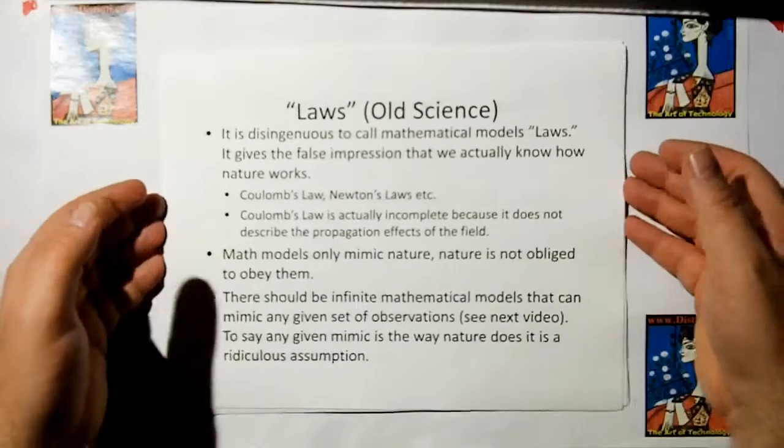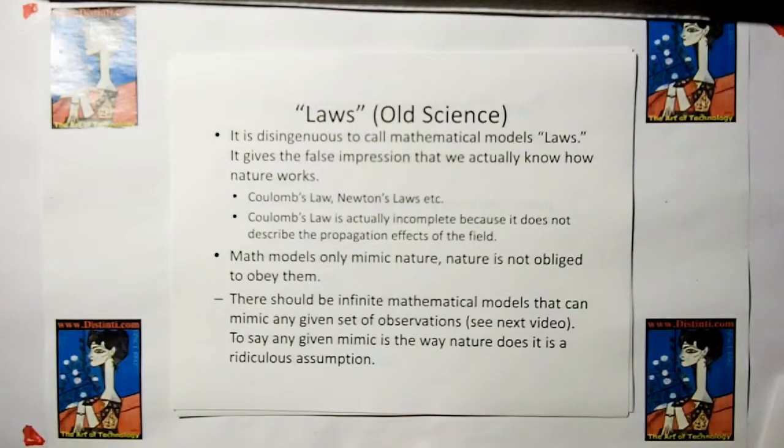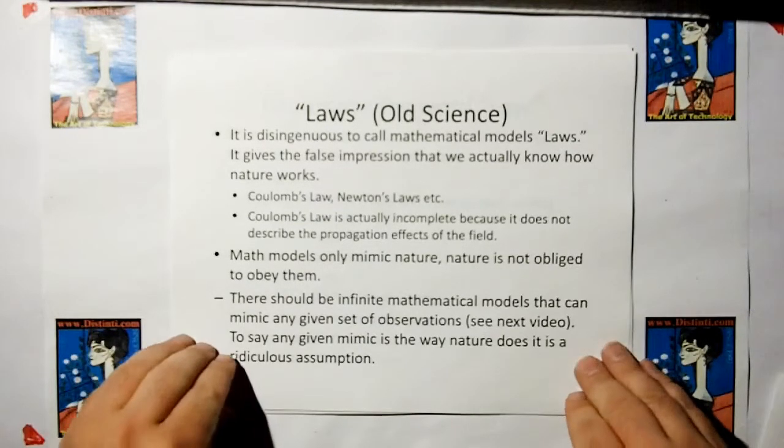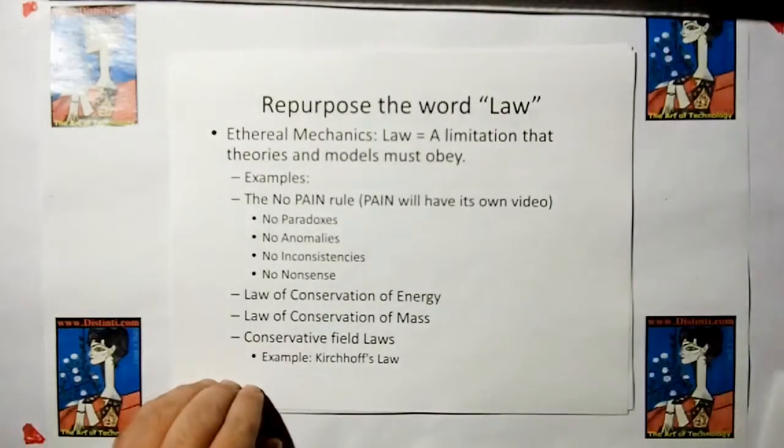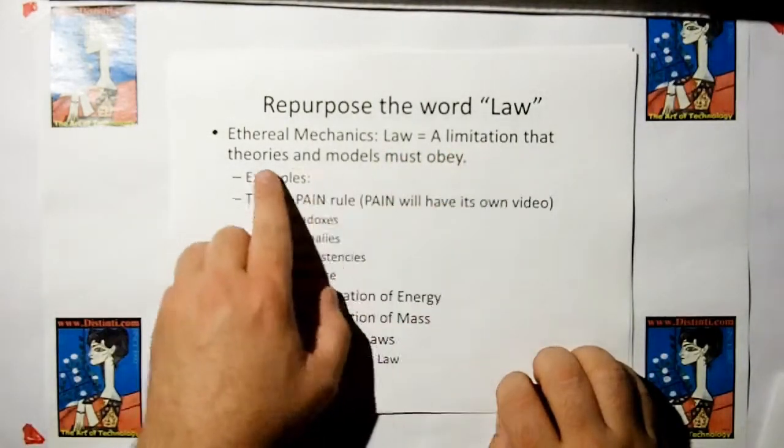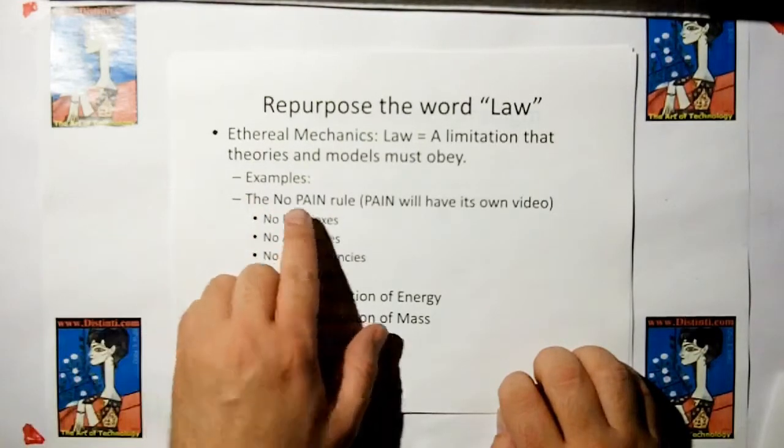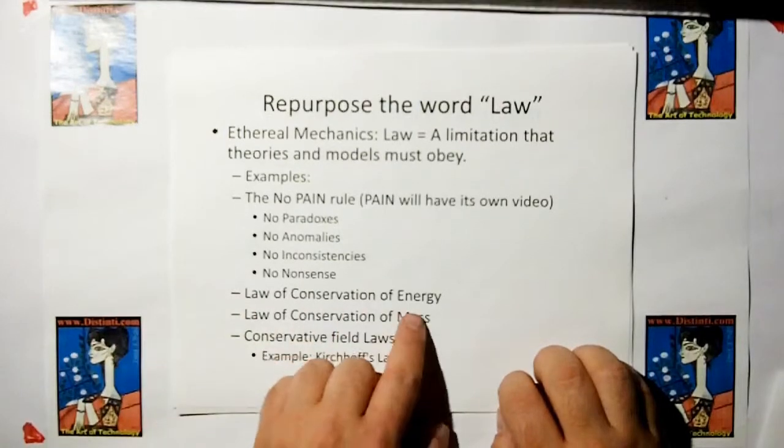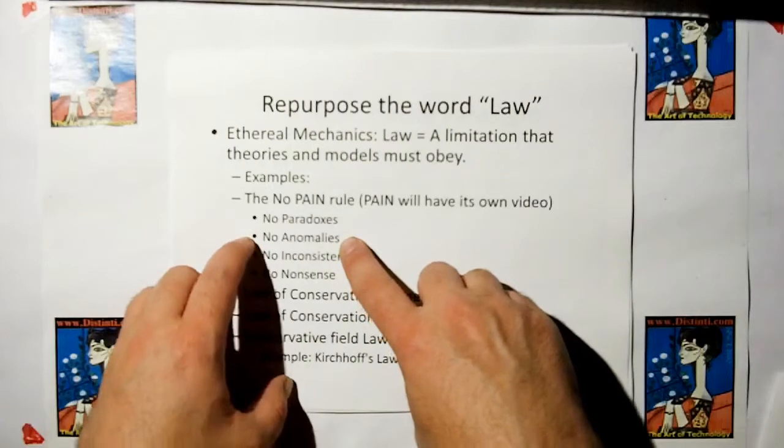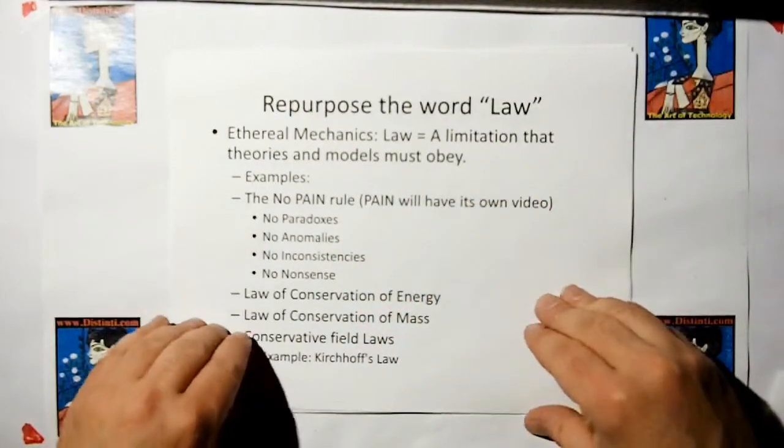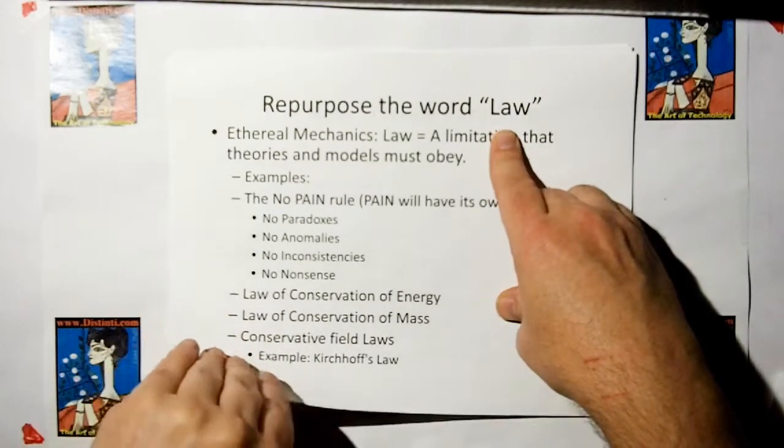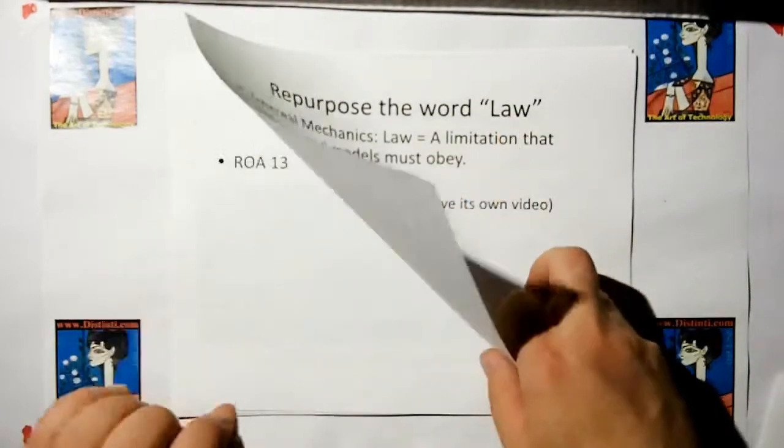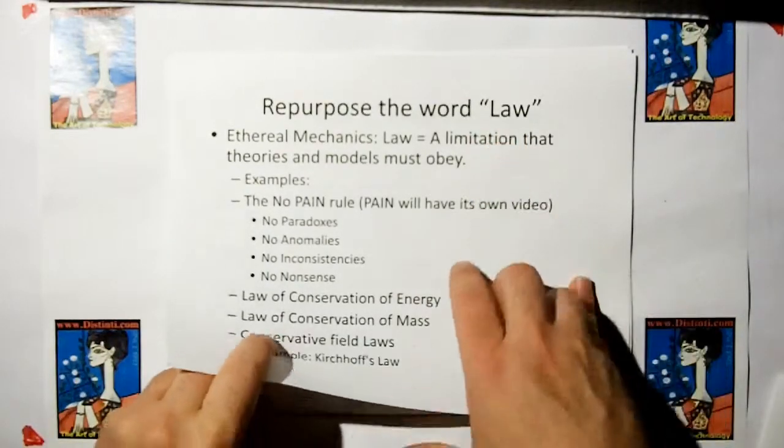Science has these things they call laws, and it's very disingenuous because it gives young physicists the idea that we really actually know what we're doing. Like we have Gauss's law, Coulomb's law. These are not laws. They're just models that mimic observations. So Coulomb's law is really Coulomb's model. Mathematical models only mimic nature. Nature is not obliged to follow them, so calling them laws is very disingenuous. We're going to repurpose the word law for ethereal mechanics. A law is a limitation that theories or models must obey. Like no paradoxes, no anomalies, inconsistencies, or nonsense. A law is not something you can derive something from, but it is a behavior that models must obey.